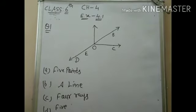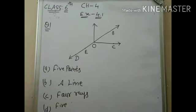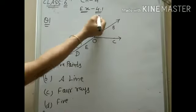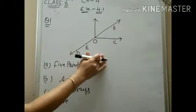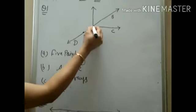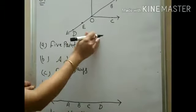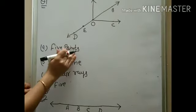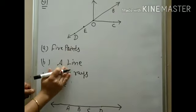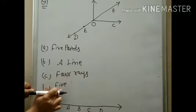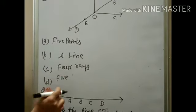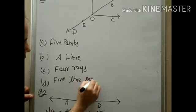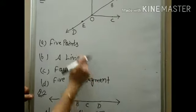Good morning students, this is Exercise 4.1 of Class 6, with a solid introduction done in a previous class. So in this class we will start Exercise 4.1. This is question number 1 and this figure is given. We will find: 4 choices are given — first find 5 points, then find a line, find 4 rays, and find 5 line segments. A figure is given and you have to find these things.